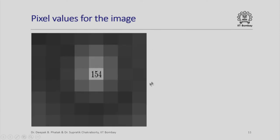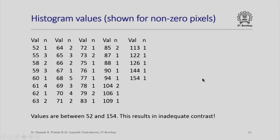Let us look at the histogram values, which are shown for non-zero pixels. From 0 up to 51 there are no pixels. There is one pixel with value 52, 3 pixels with value 55, 2 pixels with value 58, and so on. Observe that there is one pixel with value 154, but there is no pixel with value 155, 156, and so on. We notice that all values are between 52 and 154, and this results in inadequate contrast.